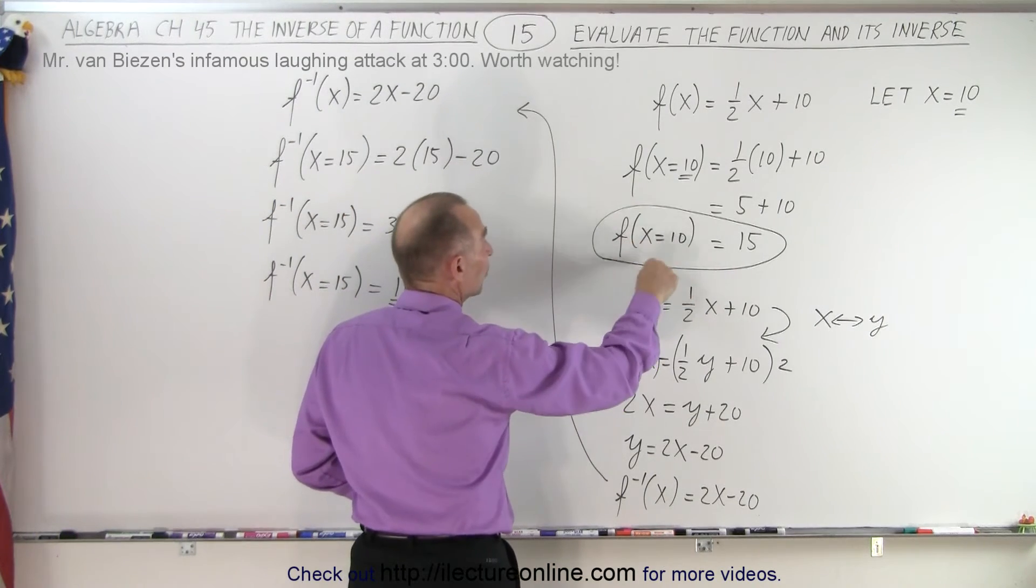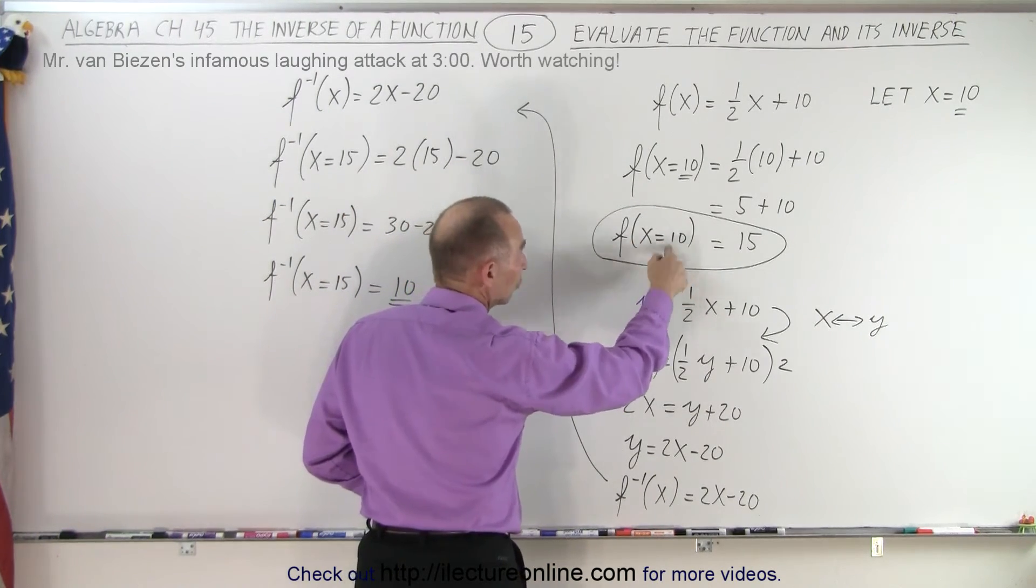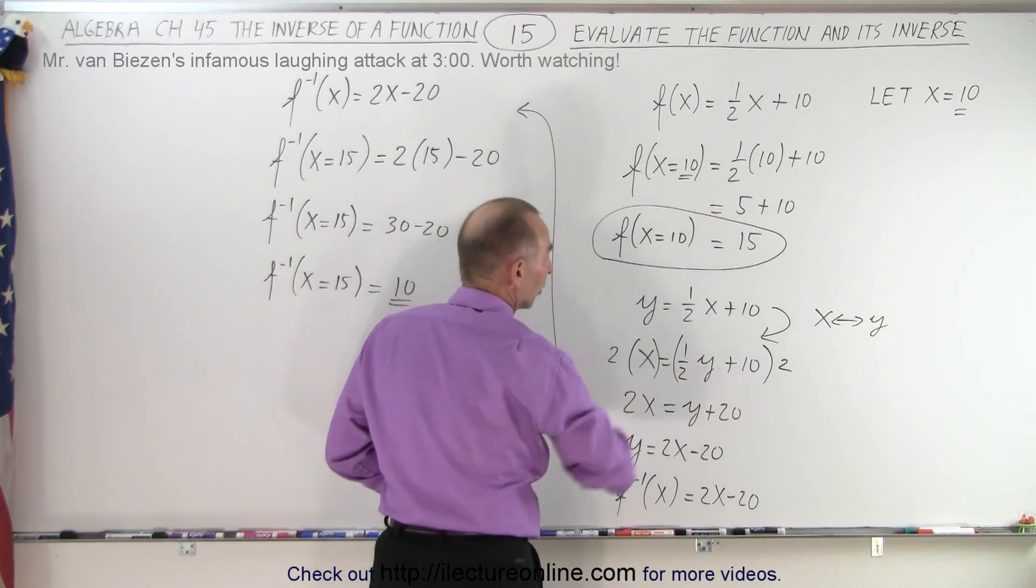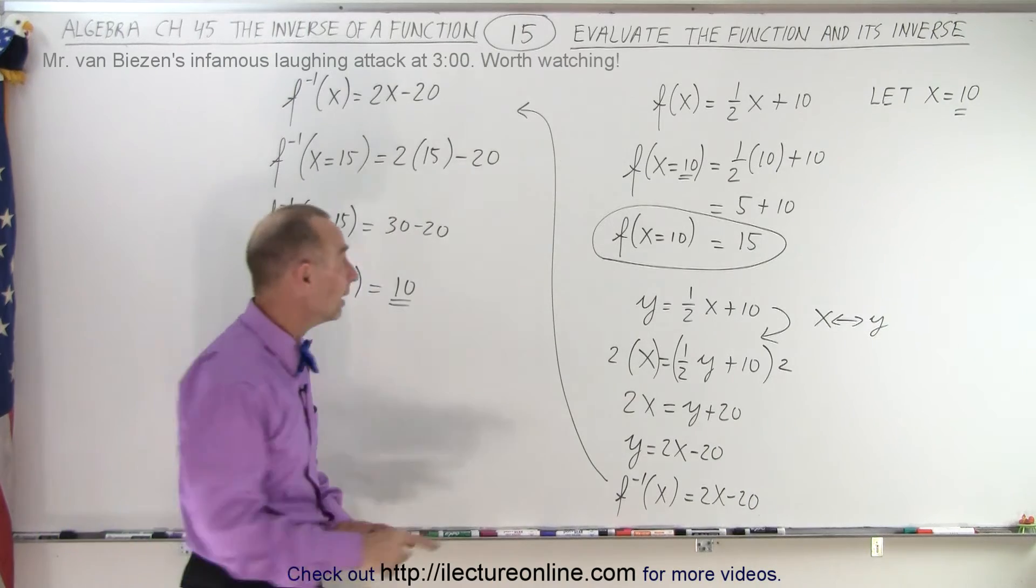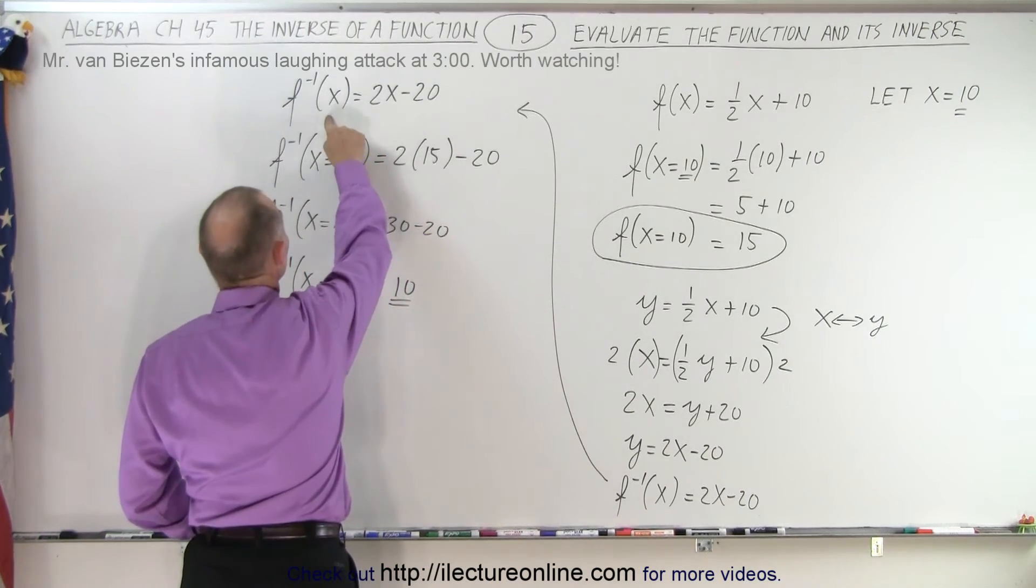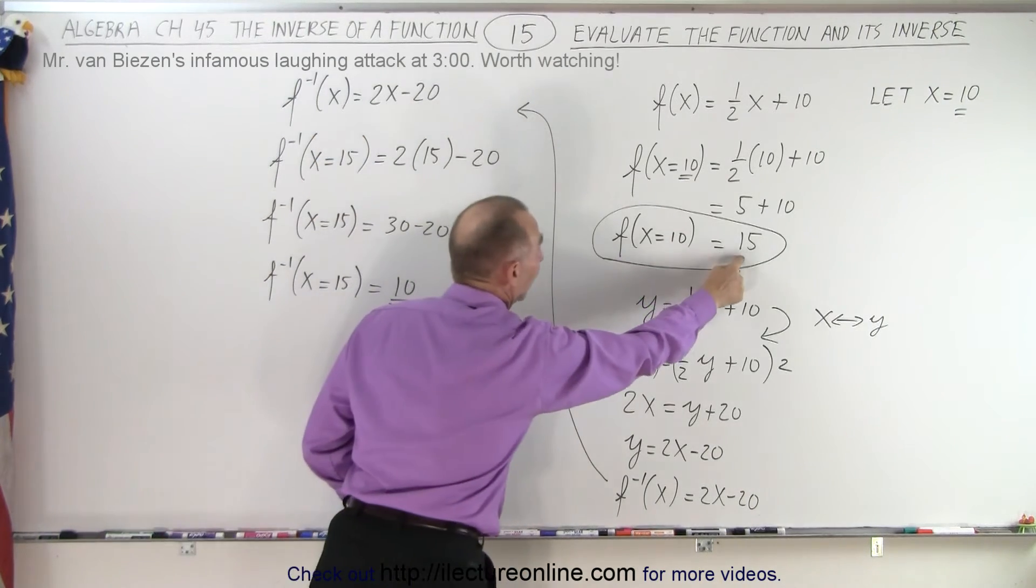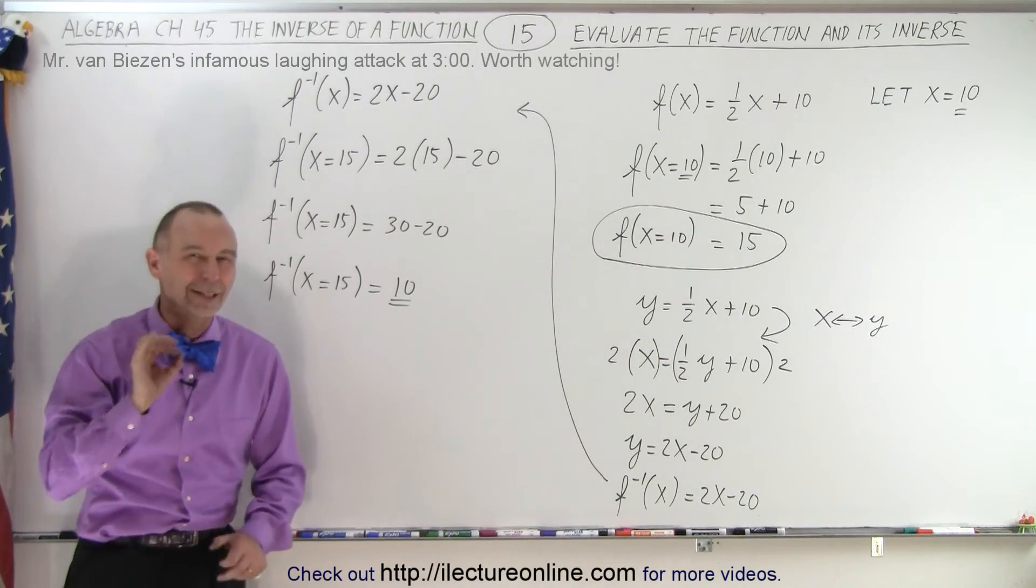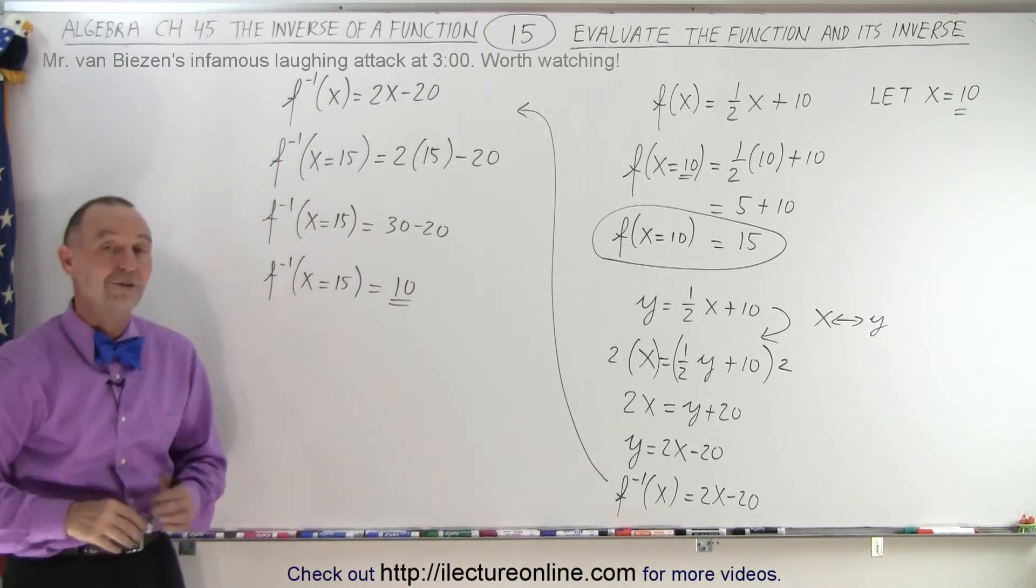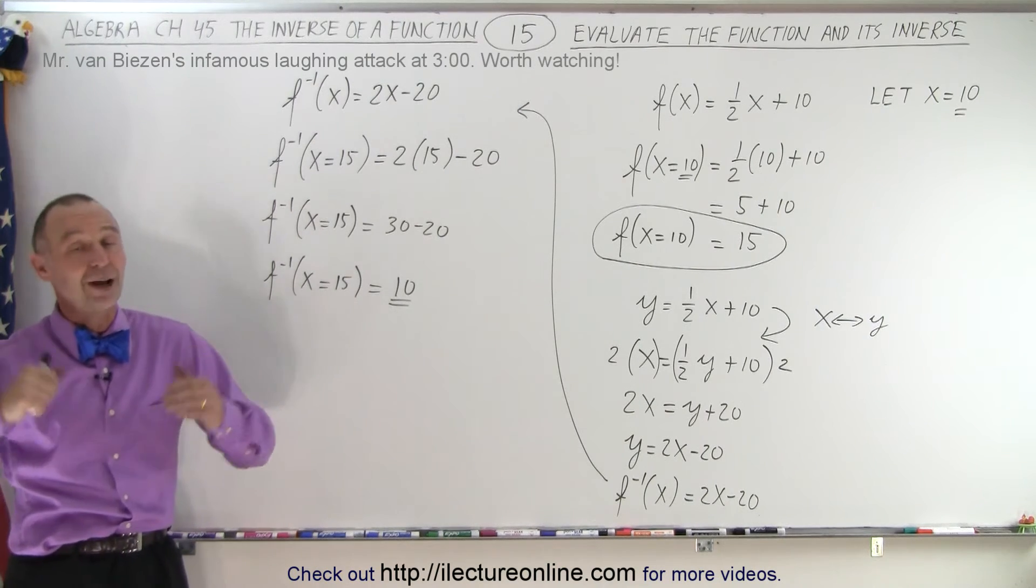That's one good way to see if you actually found the inverse of the function correctly. You find the function, you put a value into the function, x equals whatever, it doesn't matter. You get a result. Then you find the inverse of the function. To make sure you did it correctly, you then plug into the inverse of the function the result that you got, and you should get back this number right here. If you do, then you did it correctly and you found the inverse of the function correctly. And that is how it's done.